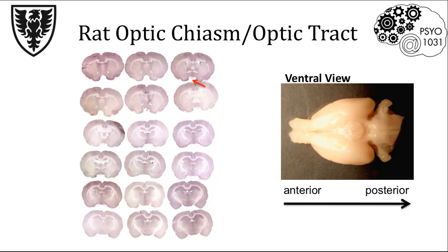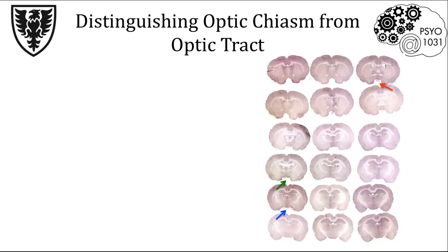If we were to section the brain in between these two lines, we would get a series of sections that looks like this. The optic chiasm is located at the most ventral surface of the brain, and it appears as a little white stripe, right here. This is the first section of our set where the optic chiasm is clearly visible, and it's visible in all the sections following that up until around here. It's a little bit difficult to see, so let's zoom in a little bit more closely to distinguish the optic chiasm from the optic tract.